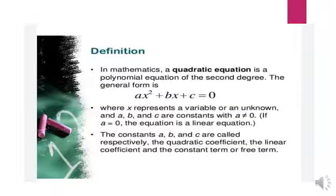Definition of quadratic equations: A quadratic equation is a polynomial of second degree. Its general form is ax² + bx + c = 0, where x represents a variable or unknown.